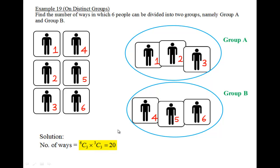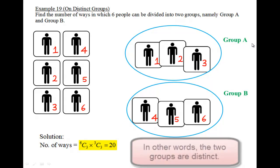But why in this case we don't have to divide by 2 factorial, like what we did in Example 18? Because in this case, we have a name for each group.